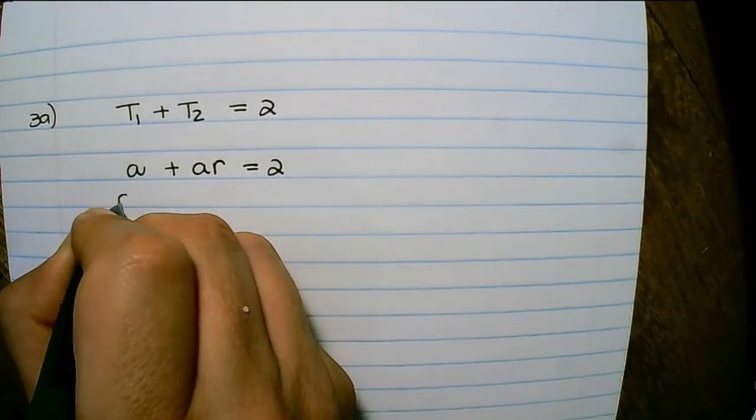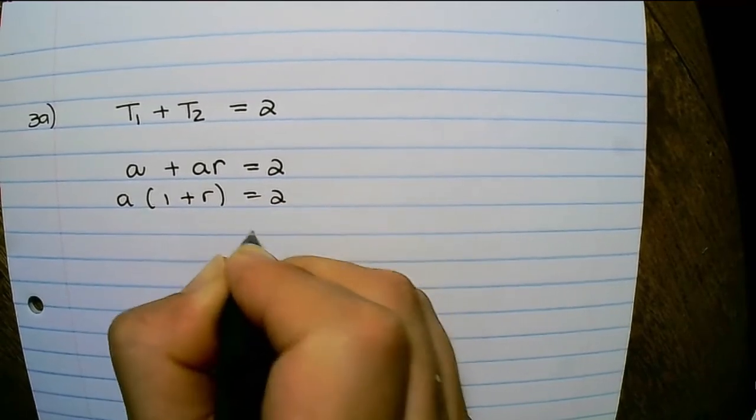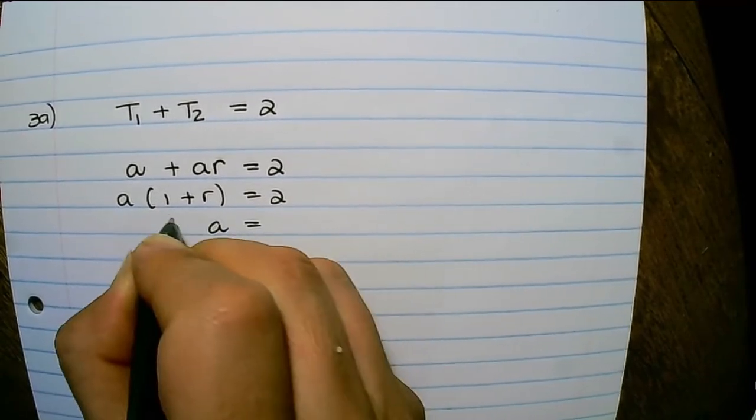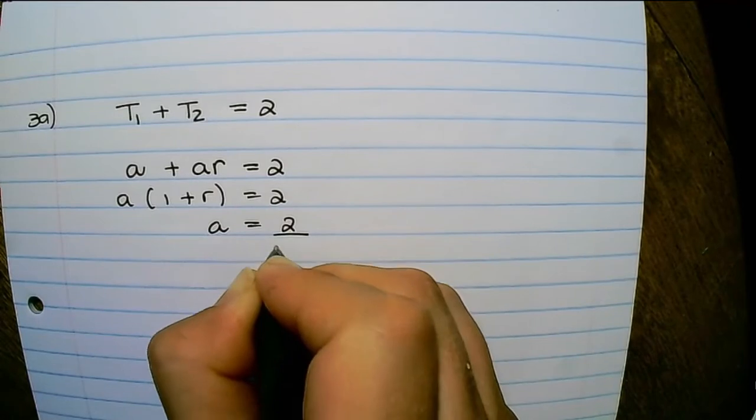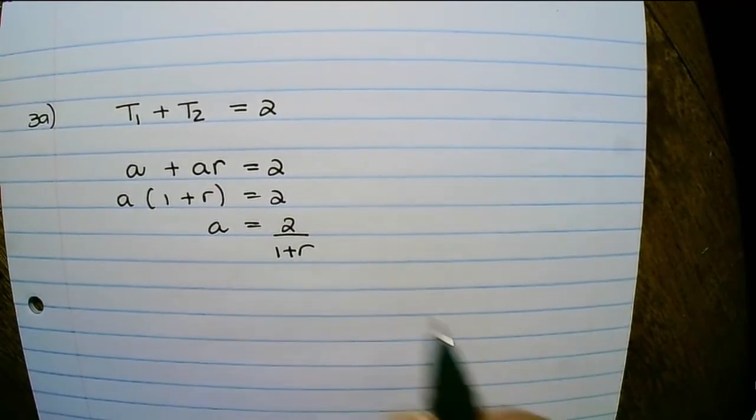I can factorize a, then divide both sides by one plus r. So a equals 2 over 1 plus r.